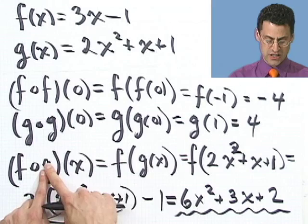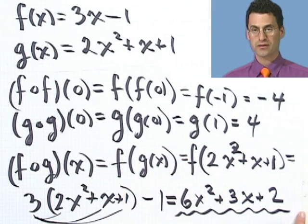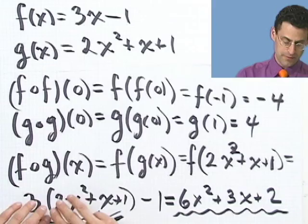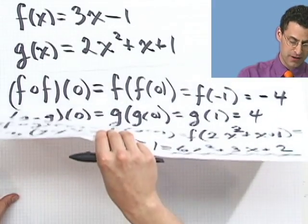So that is f composed with g of x. And look how I did it. The g came first, and then I took that answer and put it in for f. Let's do one last one. Let's figure out what g composed with f is and compare those two.